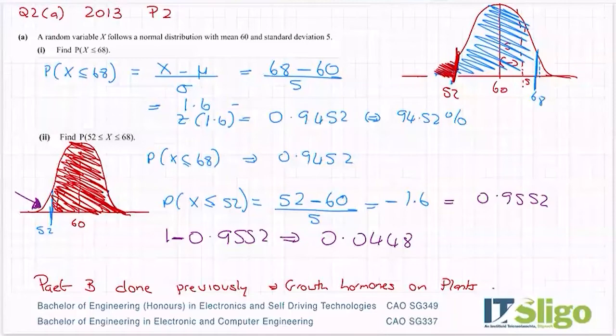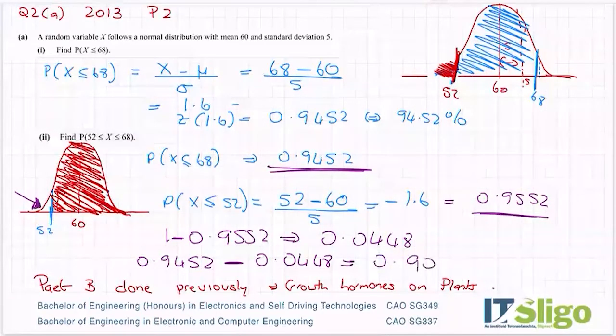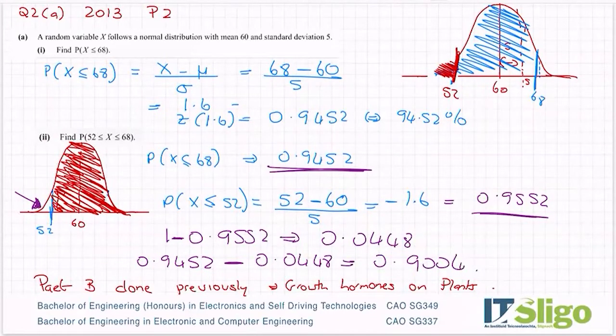So the last step in this is to take, I suppose the probability of being less than 68, 0.9452, subtract off the probability of being down under 52. And let me see what I get for that. So 0.9452 minus answer, and I'm getting 0.9004. Sorry, I did make a typo. Let me just fix my typo now. So your answers are fully correct. The method is correct. 0.9452 minus answer, 0.8904.